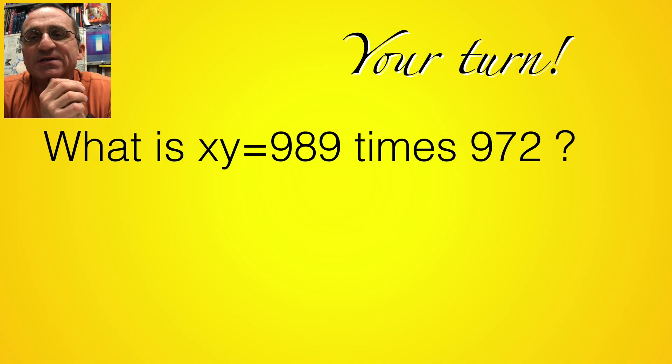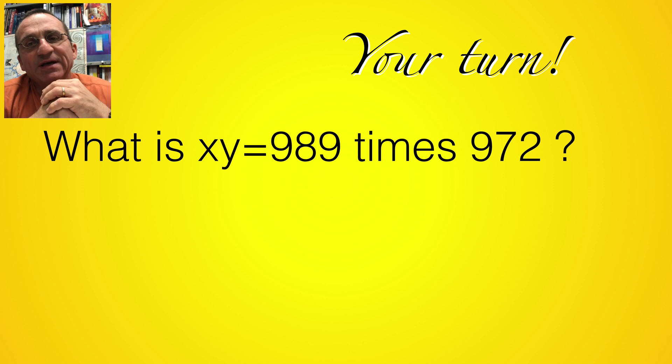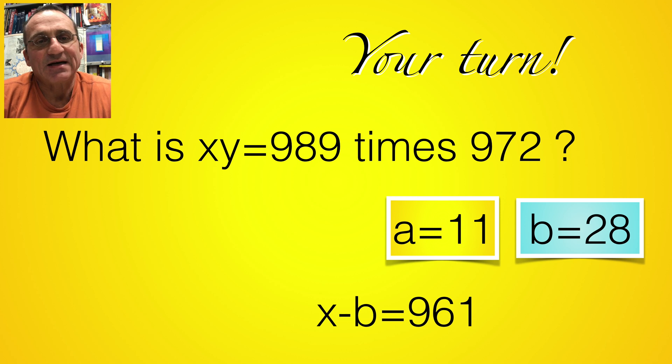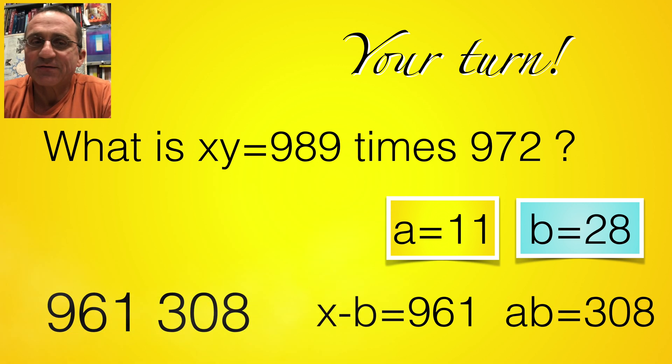Now it's your turn. What is 989 times 972? So we have to first form the differences, 11 is a and then 28 is b, and then we can form 989 minus 28, so that's 960 minus 28, that's 961, and then we have also to multiply 11 times 28, which is 280 plus 28, which is 308, and we are now done, we have 961,308. Try it out, you can learn it pretty quickly.